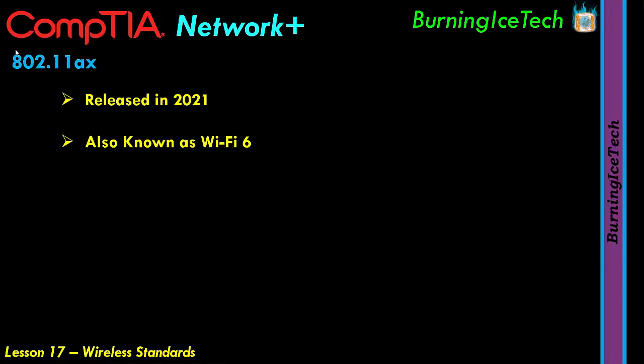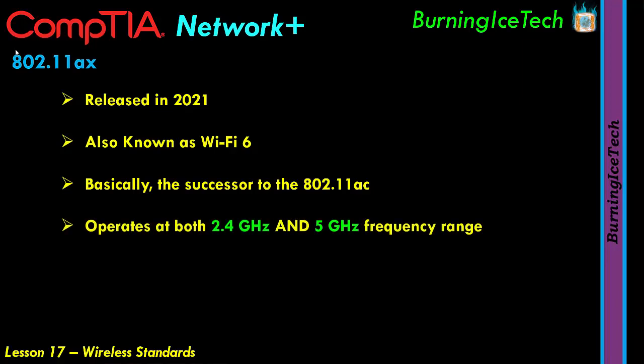Since this Wi-Fi standard is called Wi-Fi 6 and the previous was Wi-Fi 5, it should come as no surprise that this is the successor. The 802.11ax runs at both 2.4 GHz and 5 GHz, and its speed is anywhere from 4 to 10 times faster than the previous — up to about 9.6 to 10 gigabits per second, depending on channels, MIMOs, and other variables.